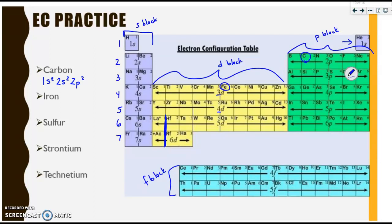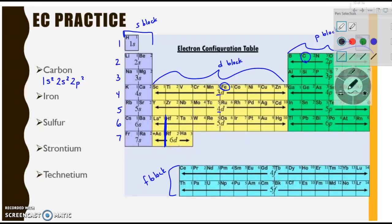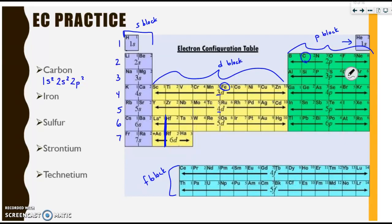Iron is all the way down here, so we know that it's going to end in 3D because it's part of the 3D block. Once again, we're going to start up top. We're going to work our way across. So we have 1S2, 2S2, 2P6, 3S2, 3P6, 4S2, and then since it is the sixth element in the D block, 1, 2, 3, 4, 5, 6, its configuration would end as 3D6. So if I write this whole thing, it looks like this.